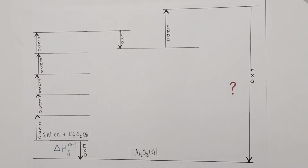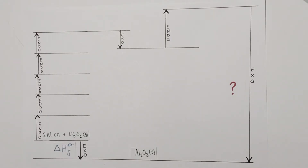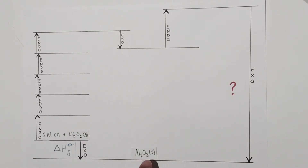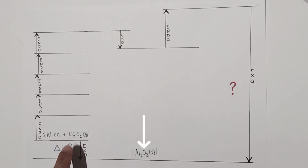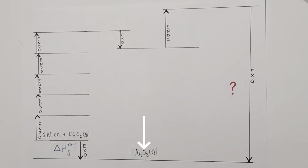The first arrow going down, representing an exothermic process, is the enthalpy change of formation — defined as the enthalpy change for the formation of one mole of a compound from its elements in their standard states under standard conditions. Here are those elements in their standard states: two moles of aluminium solid and one and a half moles of oxygen molecules in the gaseous state, giving the formula Al2O3 — three moles of oxygen atoms from 1.5 × 2 = 3.